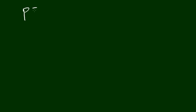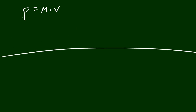So the first thing I'm going to do is I always write down my formula: momentum equals mass times velocity. By the way, the symbol for momentum is P in physics if I didn't mention that earlier. So what I'd like to do now is draw a diagram — what happened before the crash and what happened after the crash.